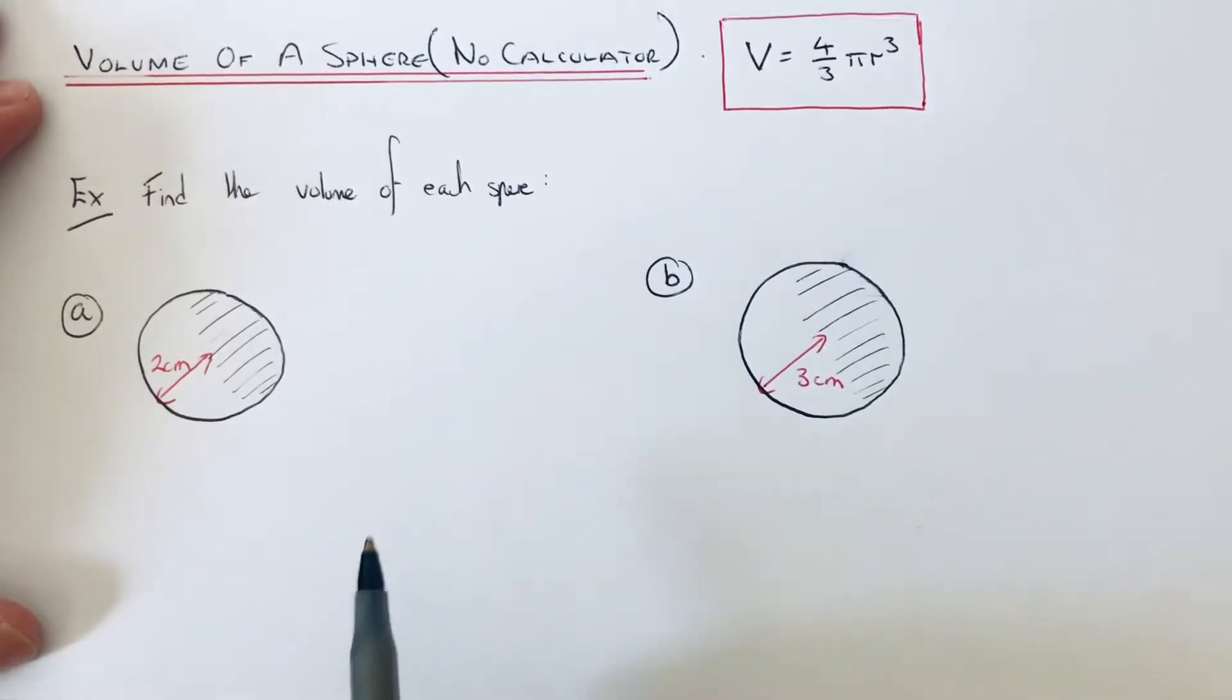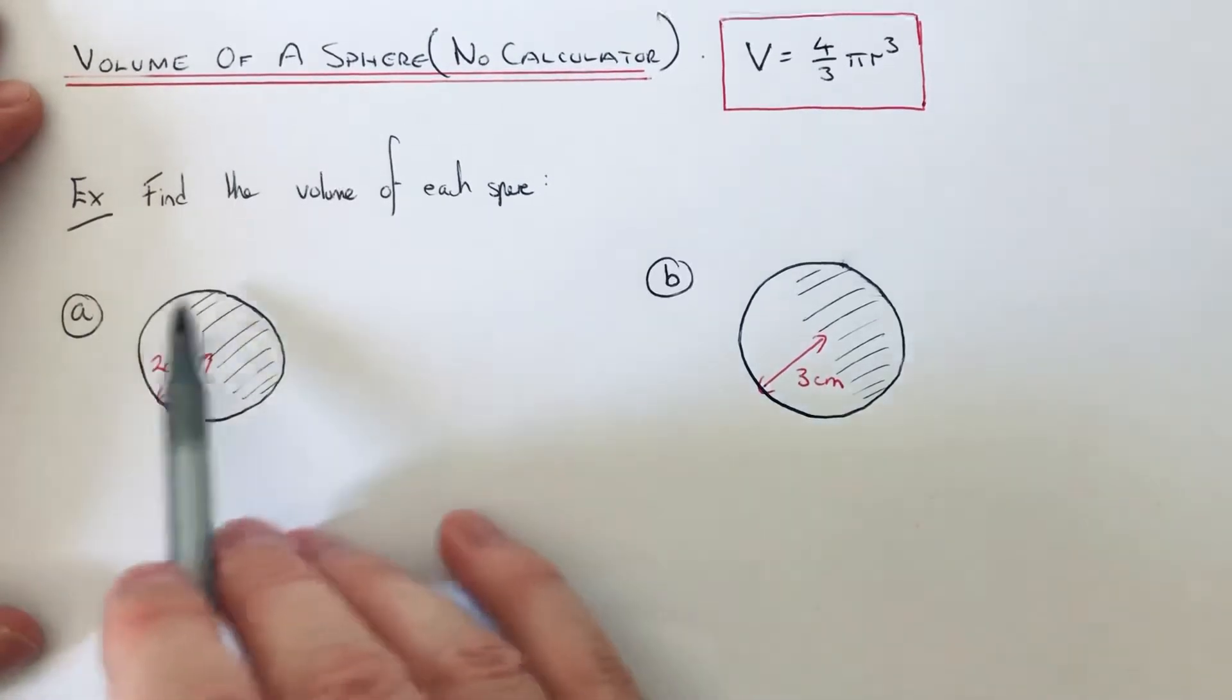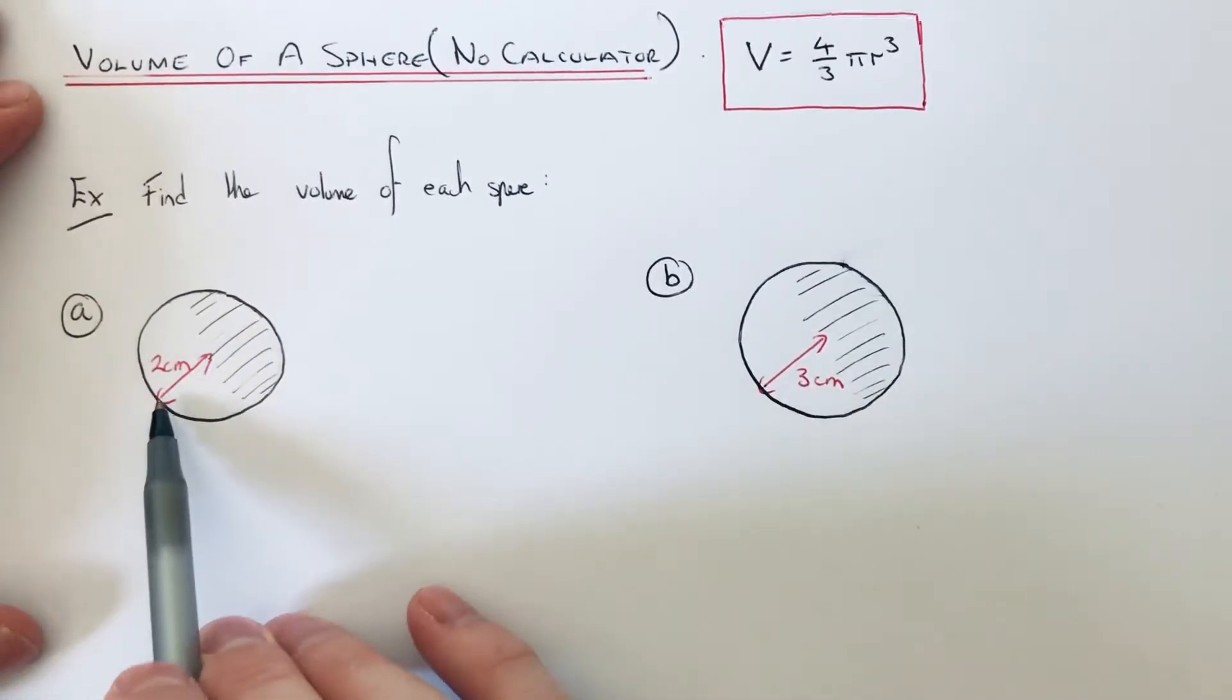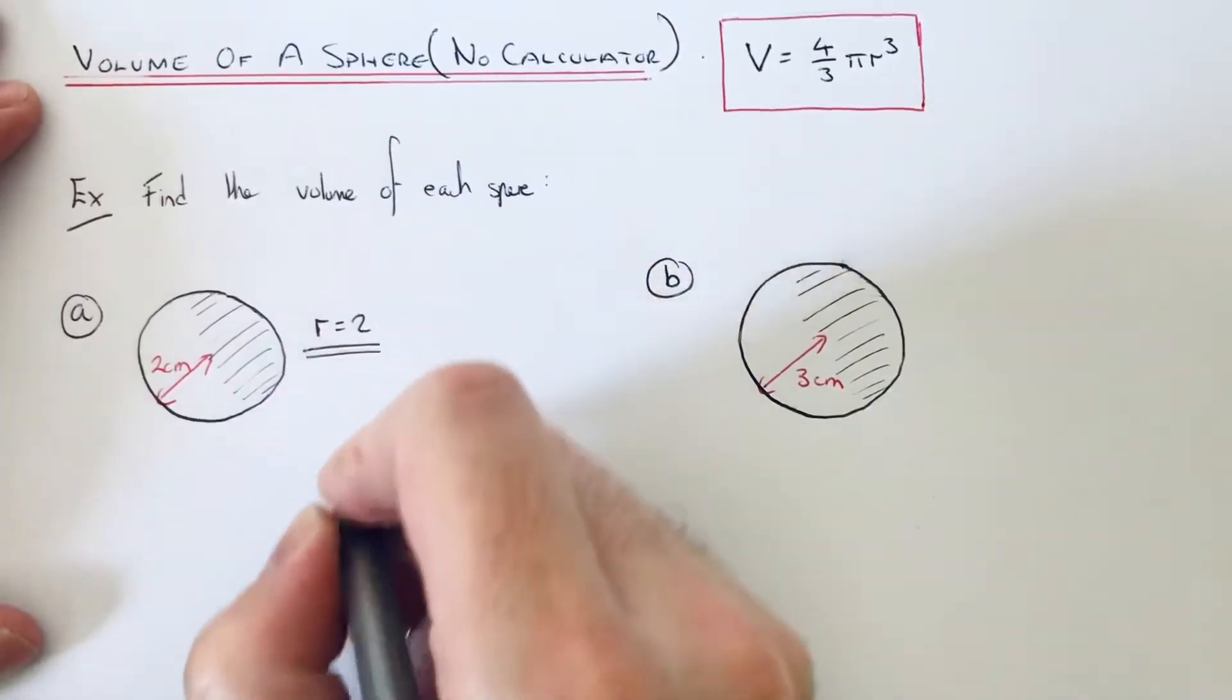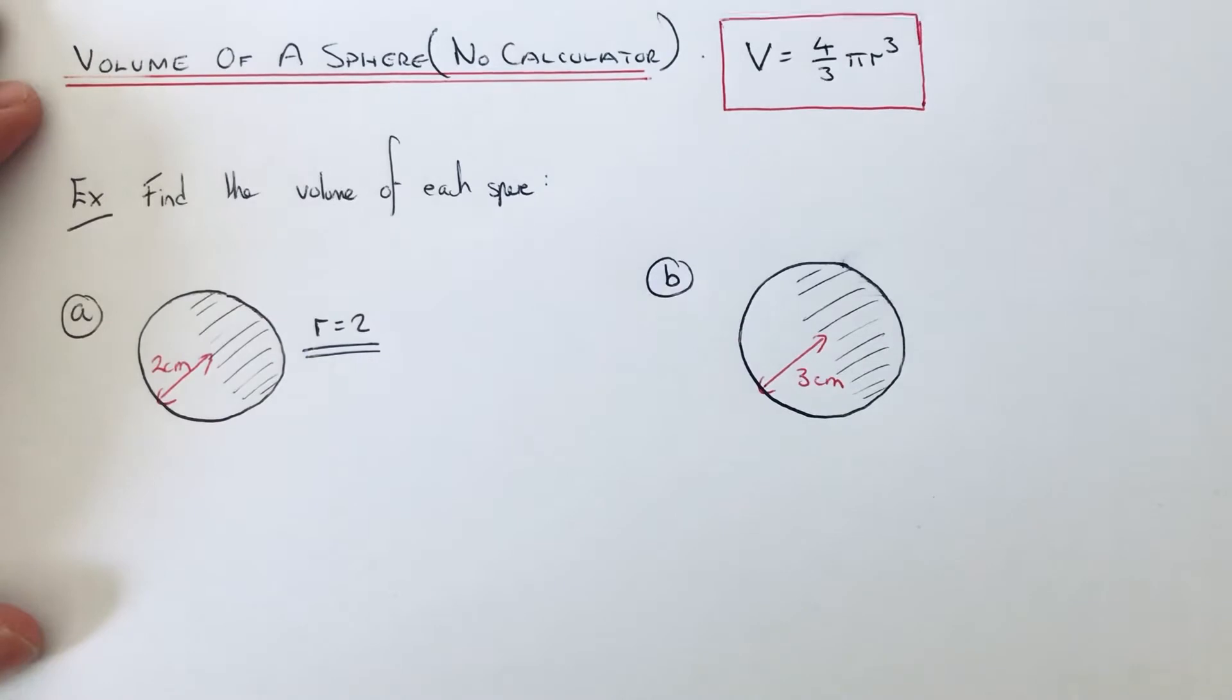Let's have a look at our first example. This sphere has a radius of 2. Let's just write that down. We need to substitute 2 into our formula above.